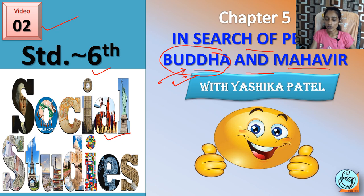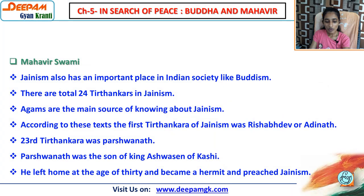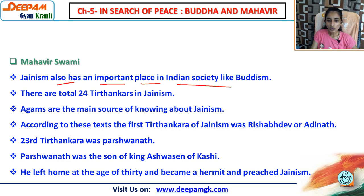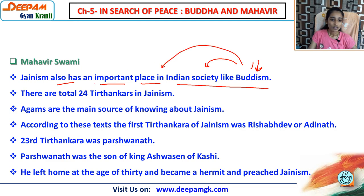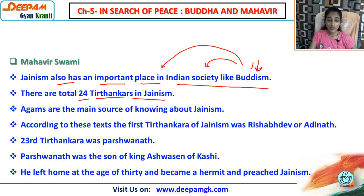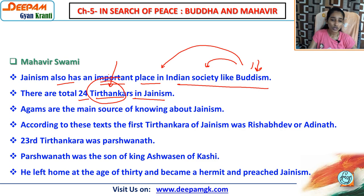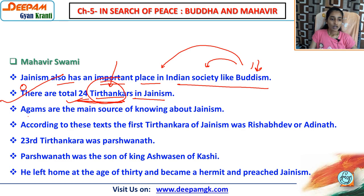Today we are going to learn about Mahavir Swami, who is connected with Jainism. Jainism also had an important place in Indian society, just like Buddhism. There were a total of 24 Tirthankars in Jainism. A Tirthankar is a saint who propagated the religion and guided people. Total 24 Tirthankars are there in Jainism — this is an important question that could be asked.